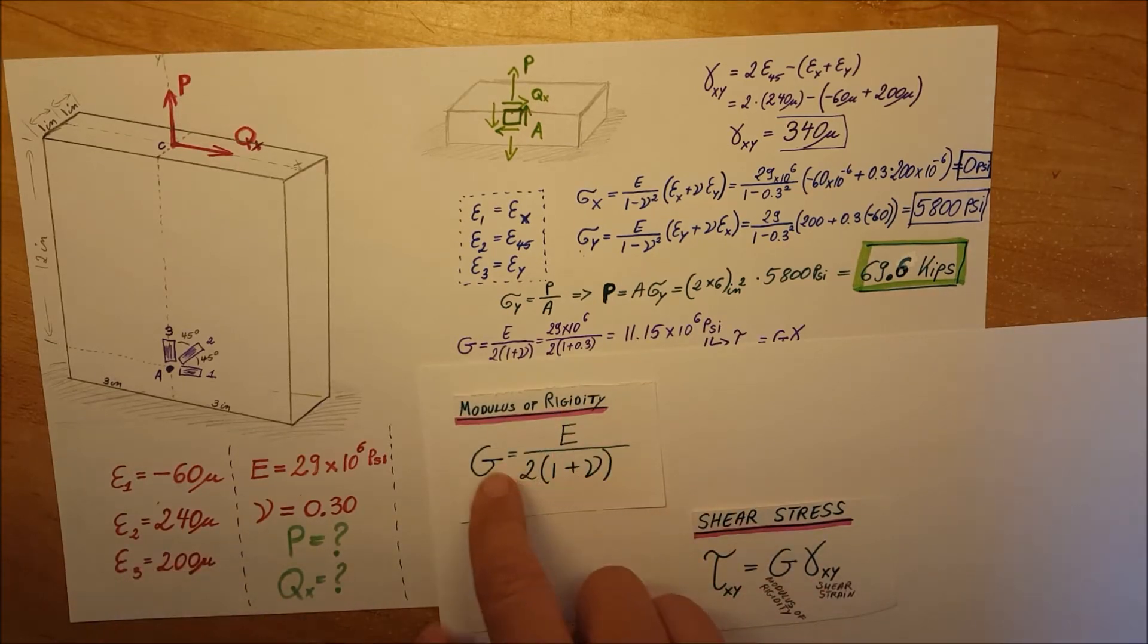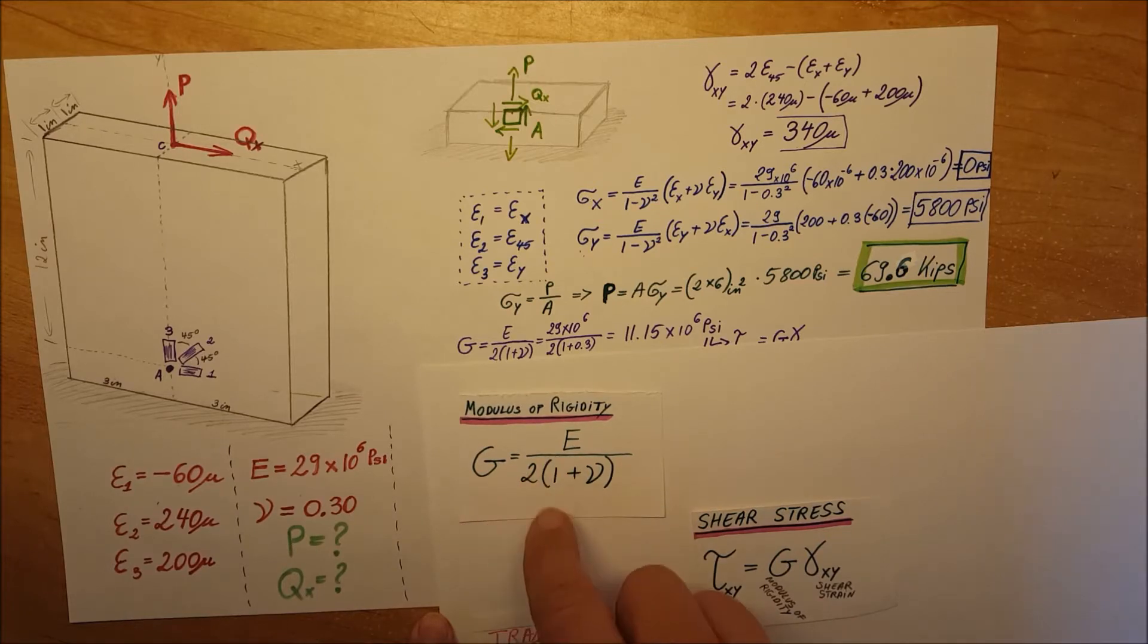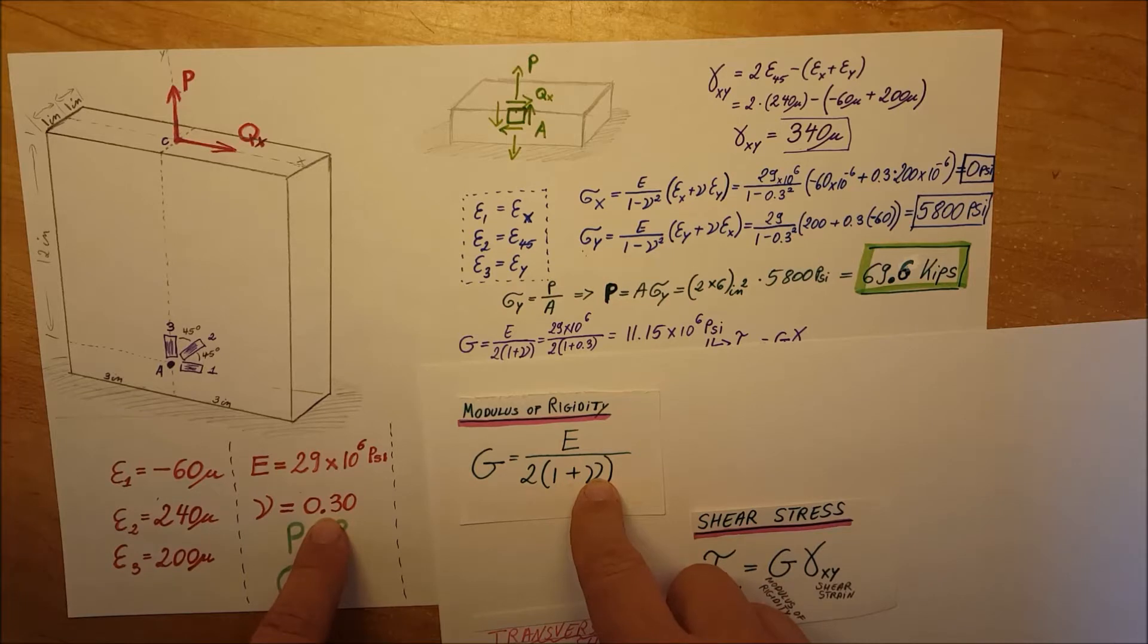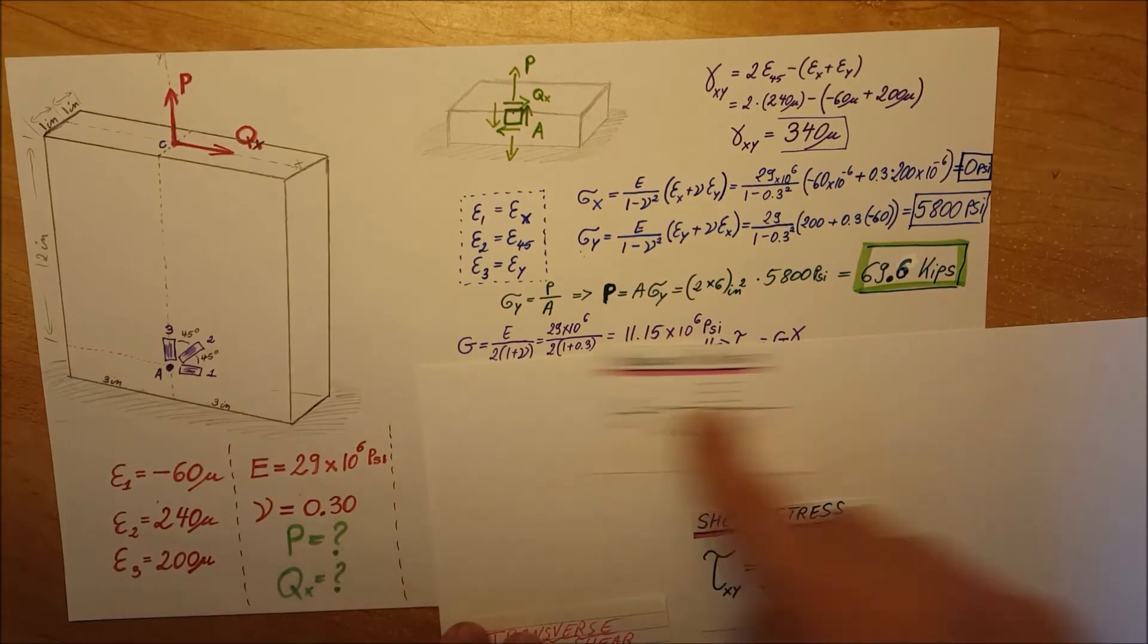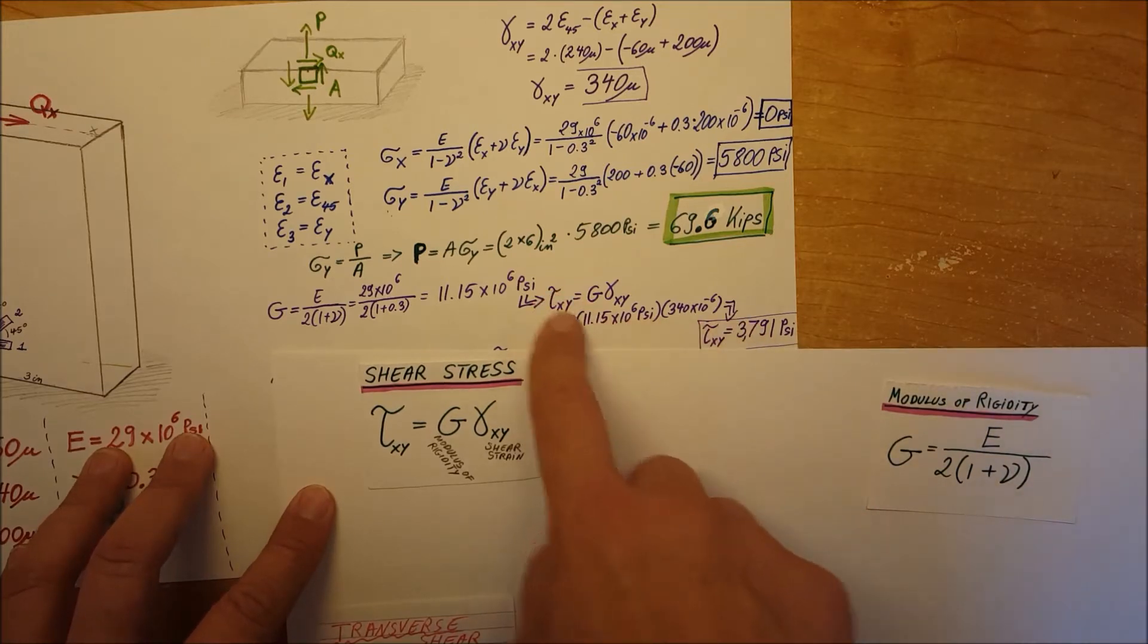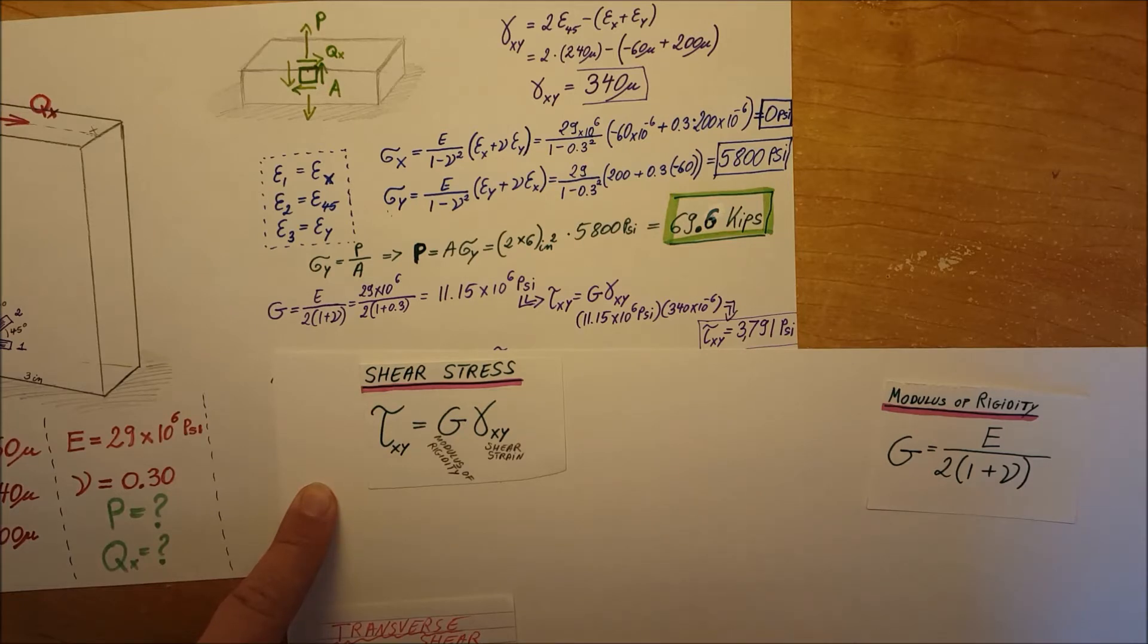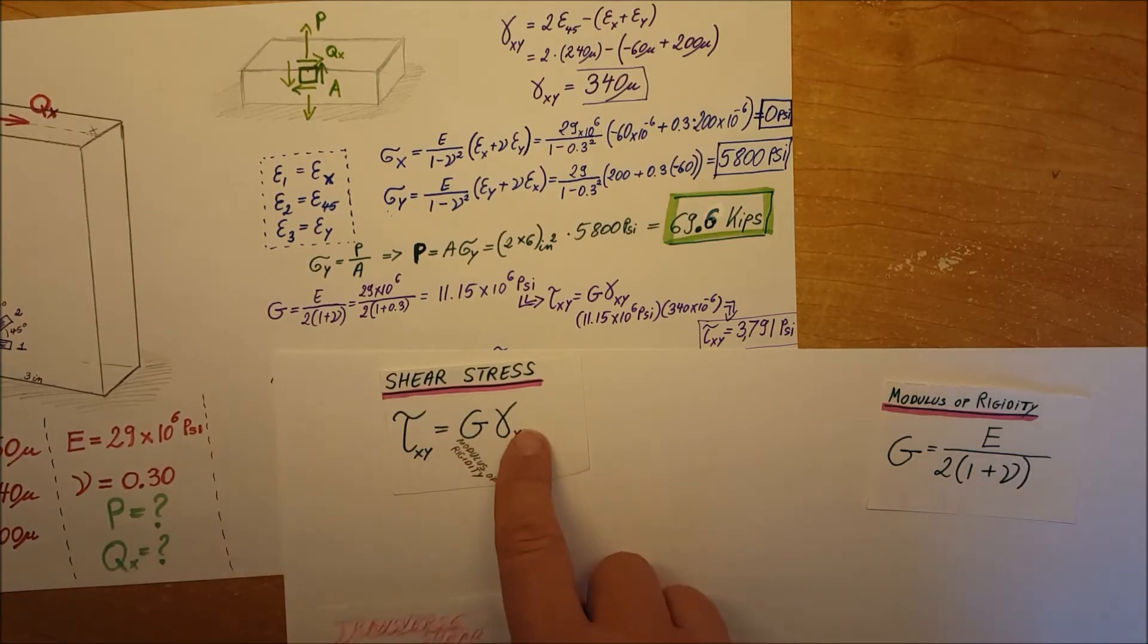First, we calculate G by E over 2 times (1 plus ν). ν is given to us as 0.30, so plug in and we find it. From here, we can calculate our shear stress, which after plugging in gives us the value of 3,791 psi.